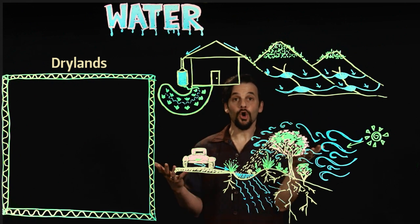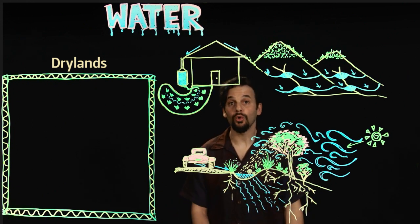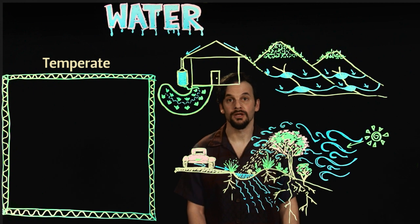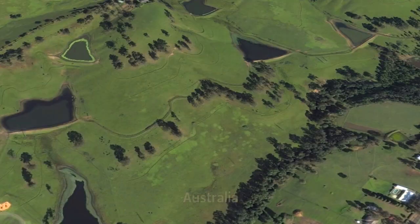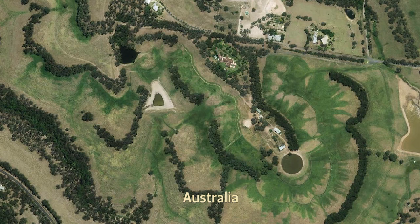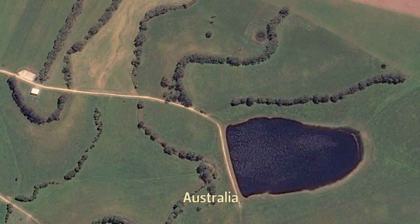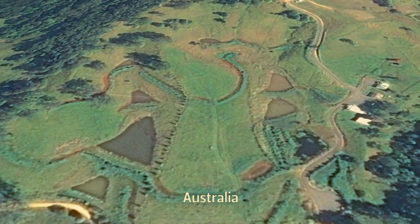Big open water storages in the desert will have a lot of evaporation, but in the cool and cold temperate regions and wet tropics, large open storages of water can have huge benefits. A series of interconnected reservoirs can virtually drought-proof farms by storing enough water to last through prolonged dry spells.